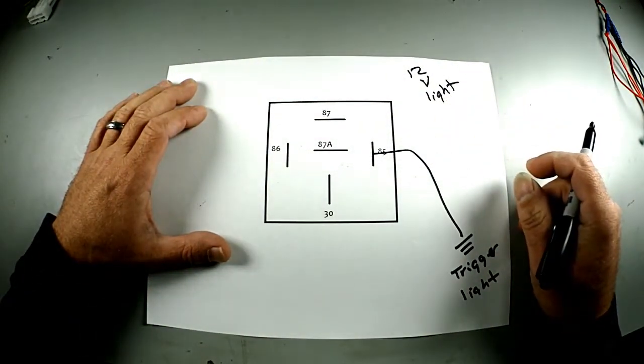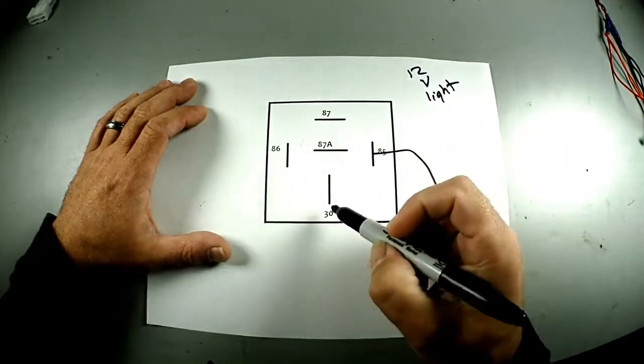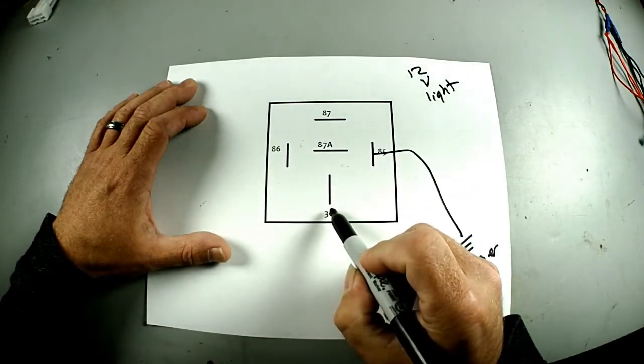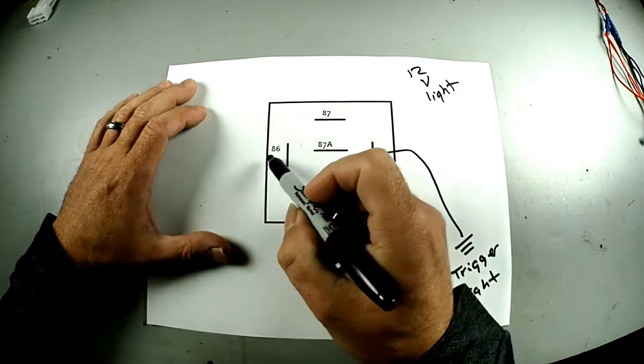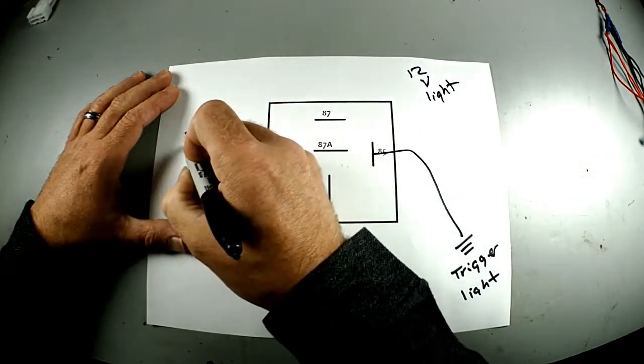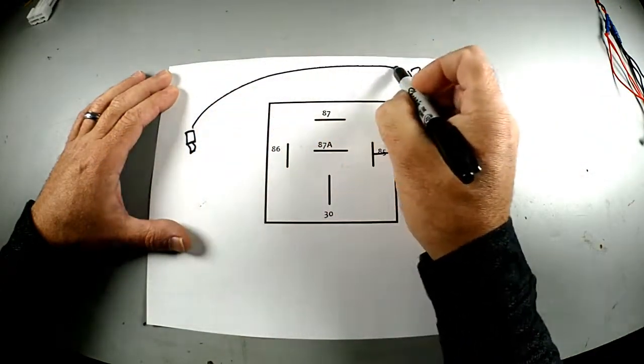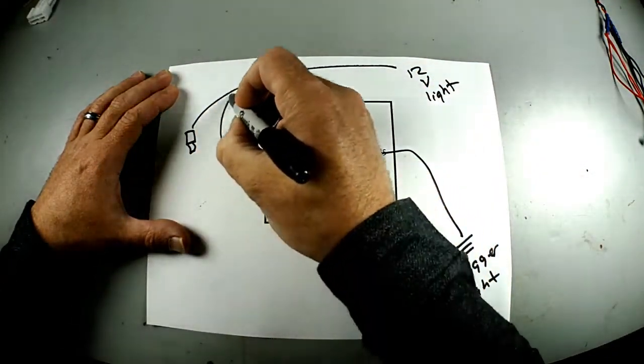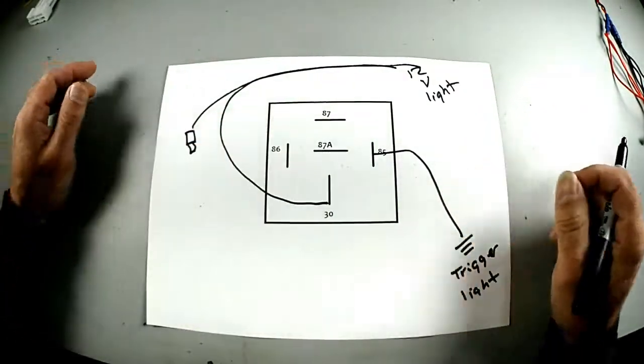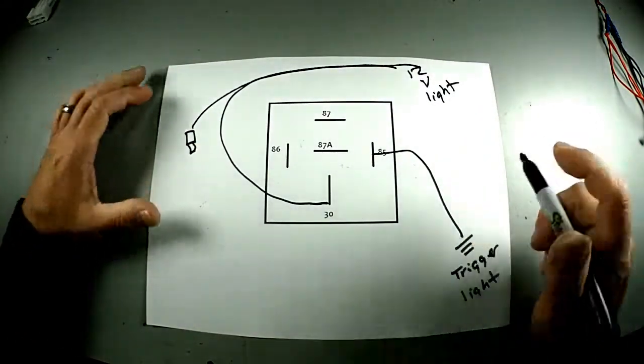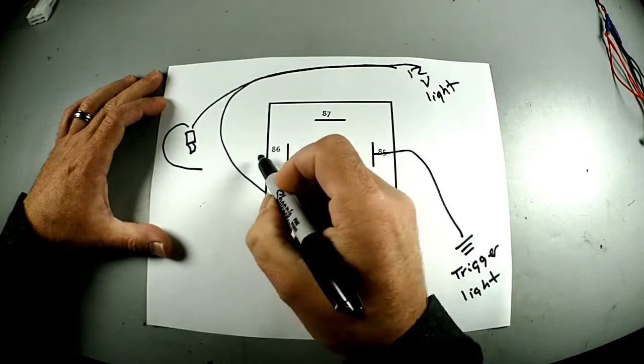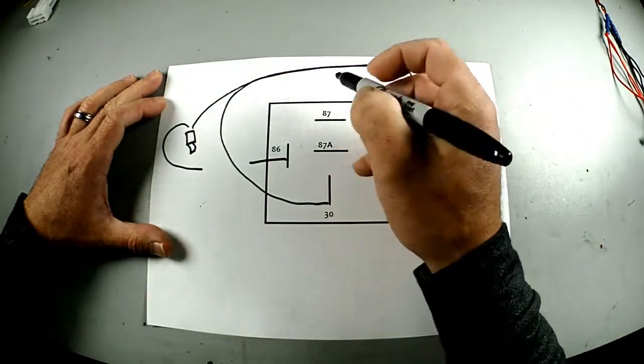Pin 30 and here's your switch - we'll call that the switch, one side of the switch - and pin 30 are both going to go to the 12-volt light. This side is going to go to pin 86, and pin 87 is your output.